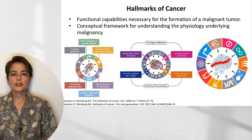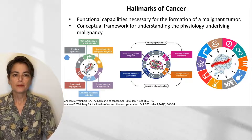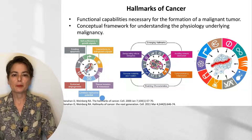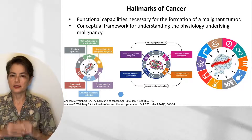In 2000, Hanahan and Weinberg proposed six hallmarks of cancer: evading apoptosis, self-sufficiency in growth signals, insensitivity to anti-growth signals, tissue invasion and metastasis, limitless replicative potential, and sustained angiogenesis. They considered these six things to be what tumor cells need.